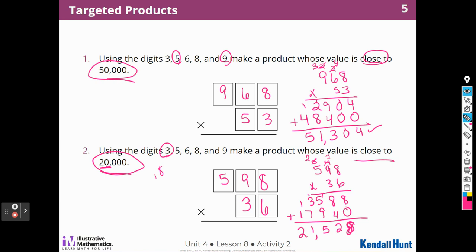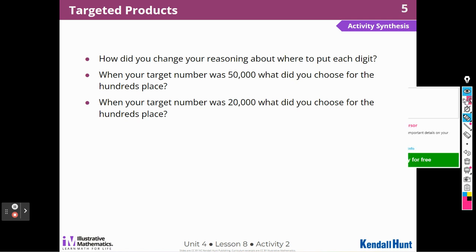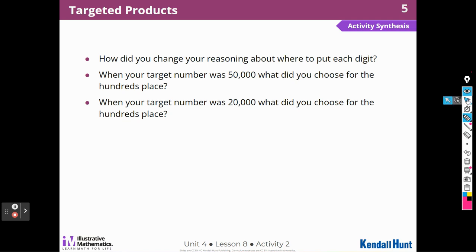All right, that did take a lot of thought today. Okay, let's see what they have for us next. How did you change your reasoning about where to put each digit? Well, I really had to think about how I was going to estimate those numbers. I had to think about what I was going to do, what the hundreds and the tens were going to be when I multiplied them together. When your target number was 50,000, what did you choose for the hundreds place? Well, I chose nine because I thought I could use the five or six in the tens of the other number and get pretty close to 50,000.